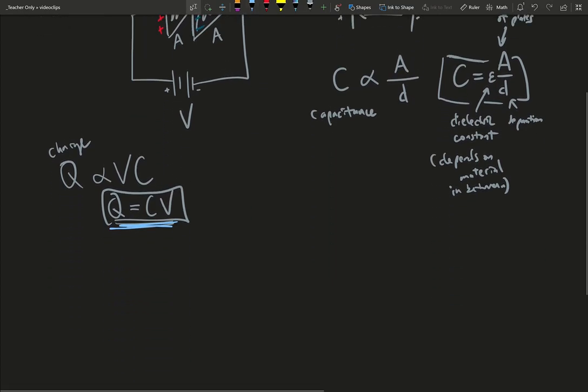Now, if we remember, Q is charge. C, in this case, represents capacitance. You can already see we have some problems. Charge starts with C. Capacitance starts with C. This is going to be tricky.